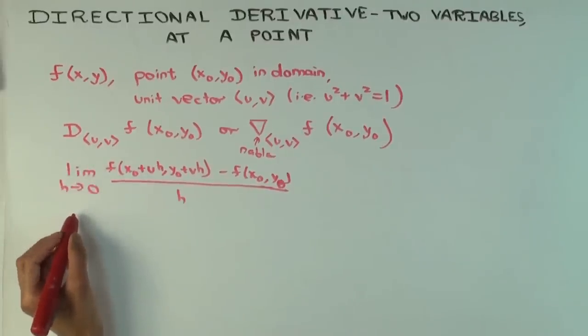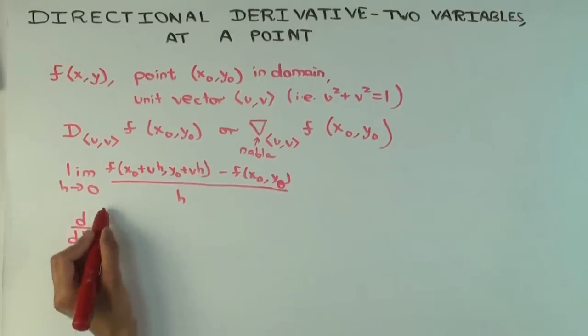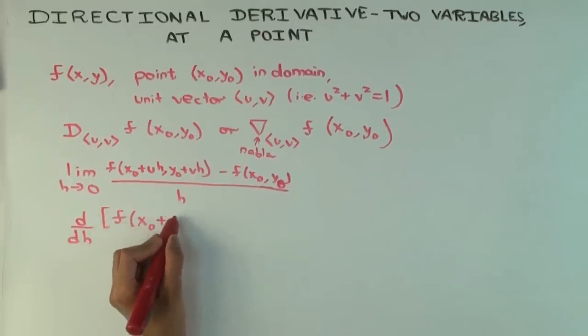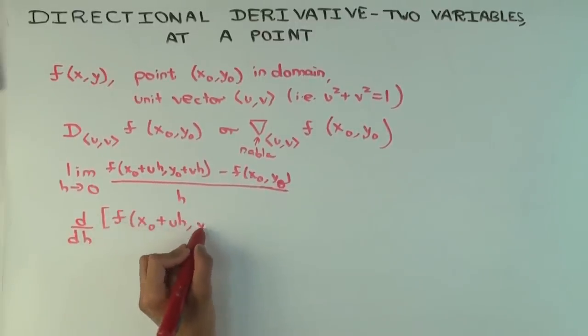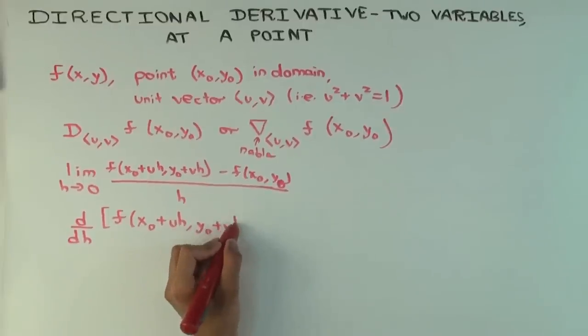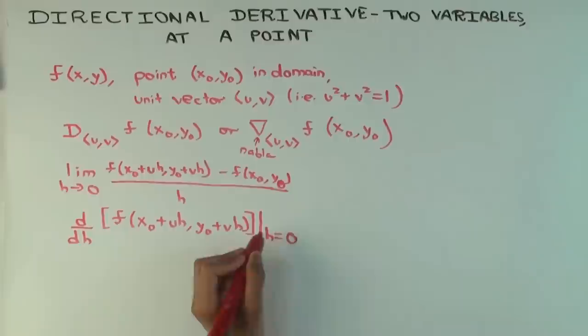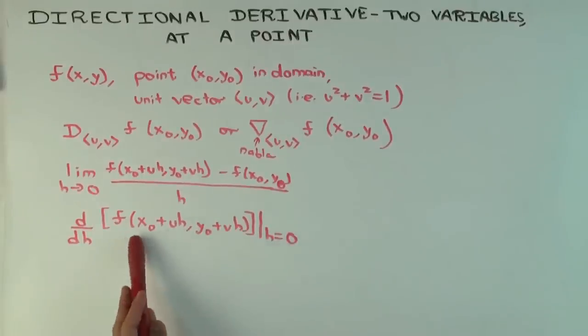Now you can also define it if you want like this. So you can define it as another definition. I mean it's the same thing. f of x₀ plus uh, y₀ plus vh at the point. So what's this doing? It's saying you're considering the function. Instead of considering the original function f, you're considering the restriction of the function to the line. So let's make a picture.